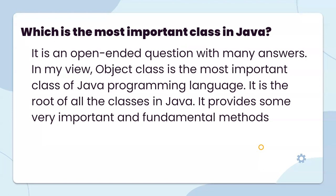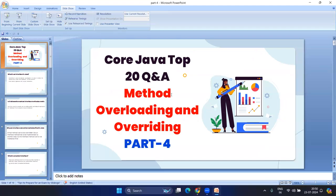Which is the most important class in Java? It is an open-ended question with many answers. In my view, the Object class is the most important class in the Java language. It is the root of all classes in Java and provides some very important and fundamental methods. So this finishes Part 4. In the next video, we will cover some other topics. Thank you, we will be back soon.